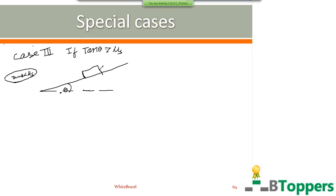I am going to consider the case where tan θ is greater than νs, and calculate the minimum force needed to keep the block at rest on the inclined plane when the force is applied parallel to the inclined plane. That means I am calculating the minimum force needed to prevent the block from sliding down the inclined plane when tan θ is greater than νs.